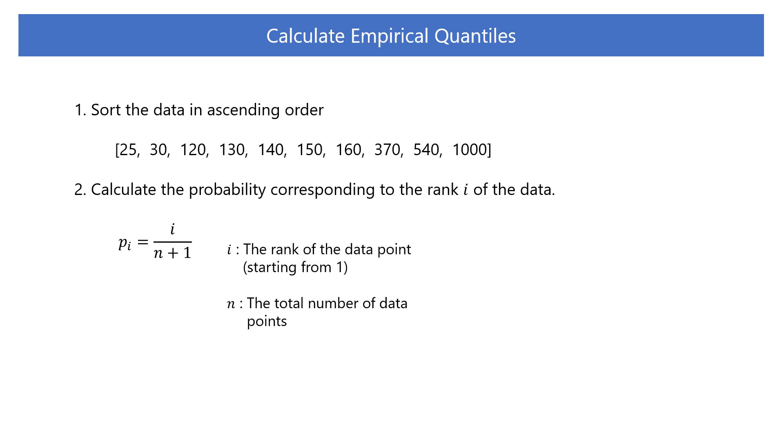Here, i is the rank of the data. It starts from 1, and n is the number of data points. For this data, n equals 10. So, the probability corresponding to each data position can be computed in this way.